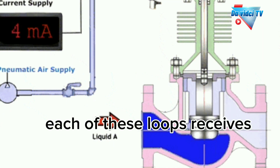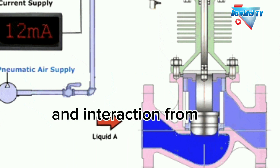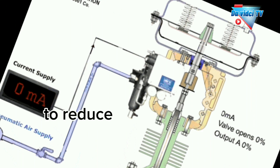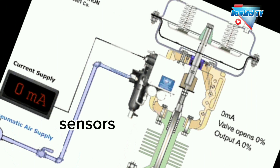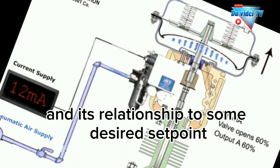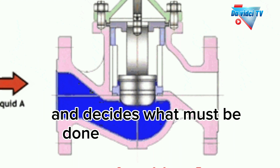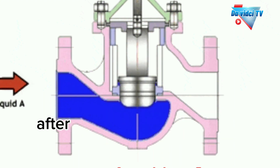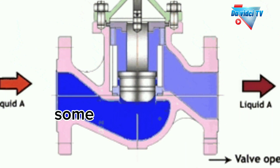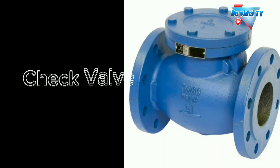Each of these loops receives and internally creates disturbances that detrimentally affect the process variable. To reduce the effect of these load disturbances, sensors and transmitters collect information about the process variable and its relationship to some desired set point. A controller then processes this information and decides what must be done to get the process variable back to where it should be after a load disturbance occurs. When all the measuring, comparing, and calculating are done, some type of final control element must implement the strategy selected by the controller.